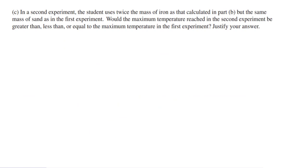The last part of the problem says in a second experiment, the student uses twice the mass of iron, that's very key there, but the same amount of sand as in the first experiment. Would the maximum temperature reached in the second experiment be greater, less than, or equal to? We want to figure out what happens to the maximum temperature. Let's go again logically with these lab questions.